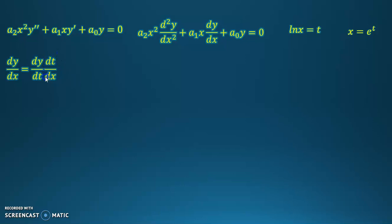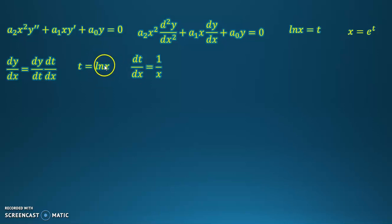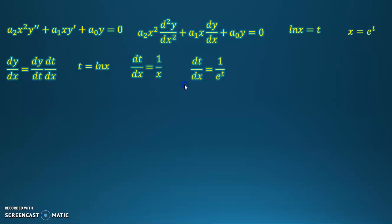We need to calculate the derivative of t with respect to x. To do that, we remember the substitution from the beginning: t equals the natural logarithm of x. Differentiating with respect to x gives dt/dx equals 1 over x. Since x equals e to the t, we have that dt/dx equals 1 over e to the t, or simply e to the negative t.